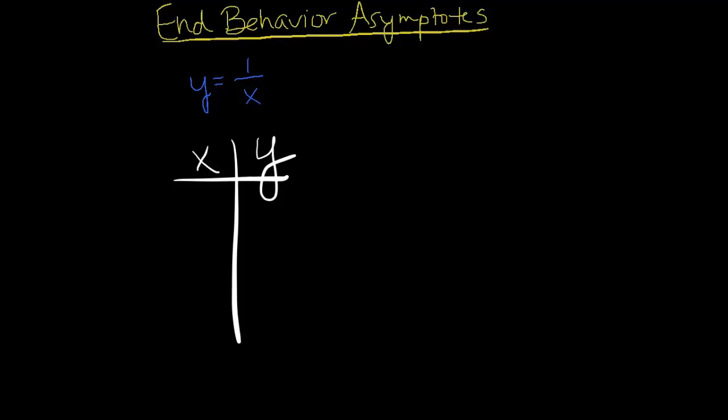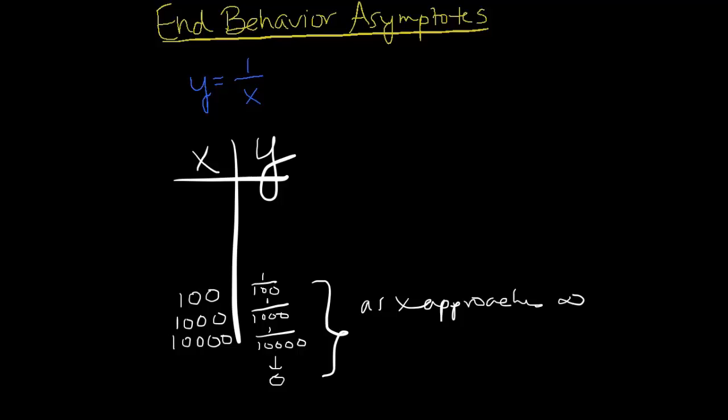But we can plug in some numbers like 100 or 1,000 or 10,000. So what happens as we do that? As I start plugging in those values into my table here, we're just going to get 1 over that value. And as you can see, this value is going to approach 0.